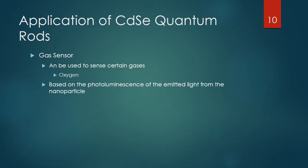Target gases would dramatically increase or decrease the photoluminescence seen for that nanocrystal. Being able to monitor this drastic change in photoluminescence lets you determine how much of that gas is present.